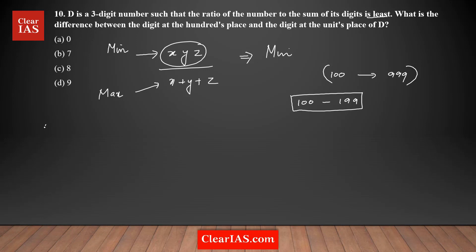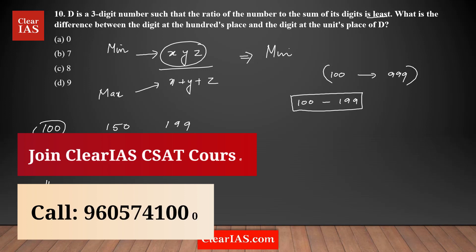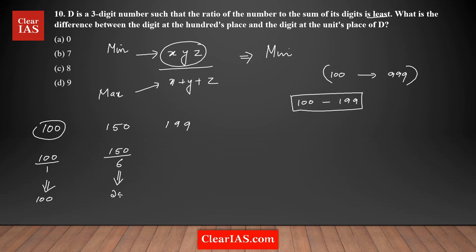Let's take the smallest value, 100, then a middle value, 150, and the maximum value in the range, 199. For 100, the sum of digits is 1 plus 0 plus 0 equals 1, so the ratio is 100. For 150, the sum is 6, so 150 divided by 6 is around 25. For 199, the sum is 1 plus 9 plus 9 equals 19, giving a ratio close to 10 point something. You just need the approximate value.